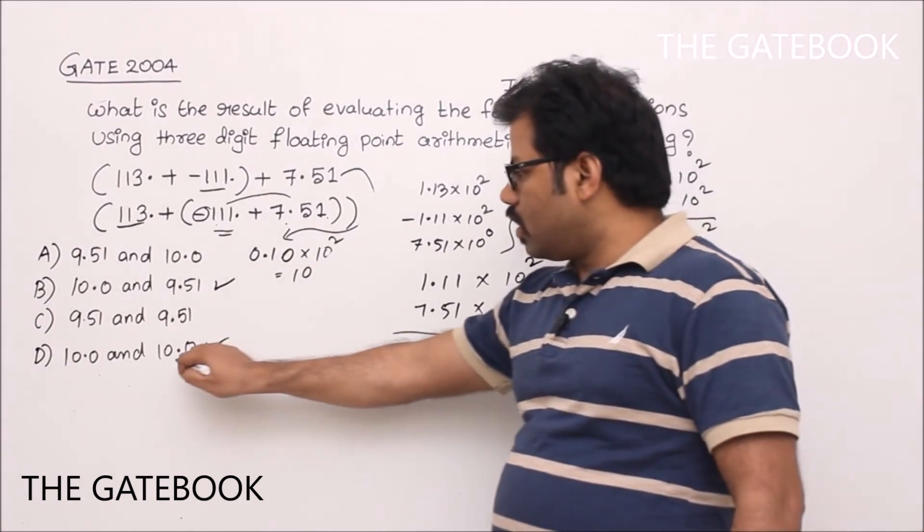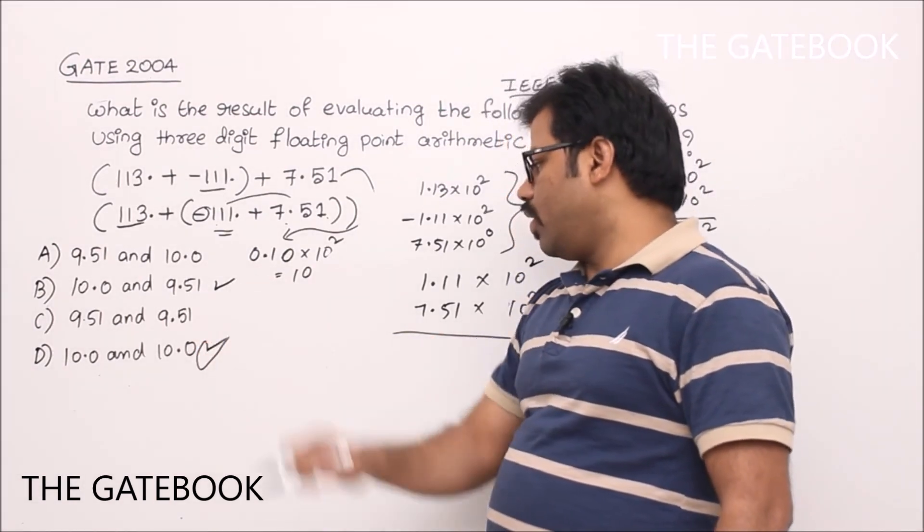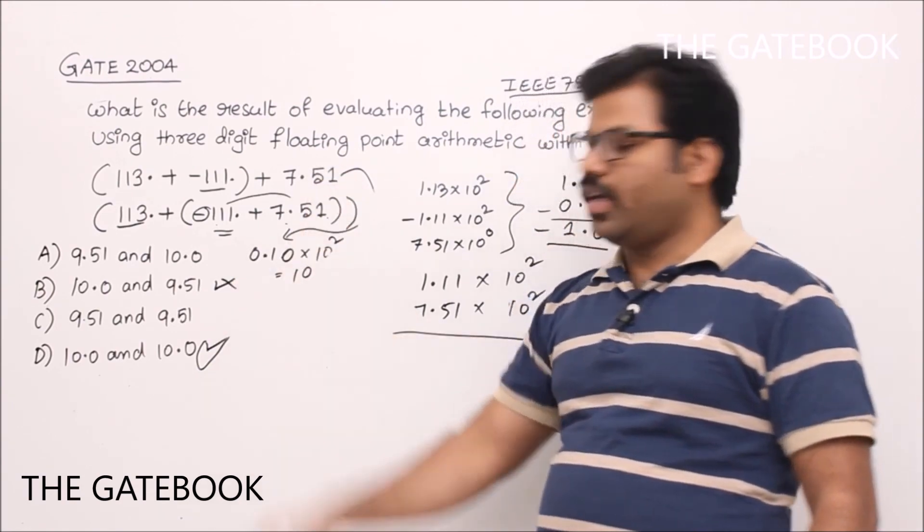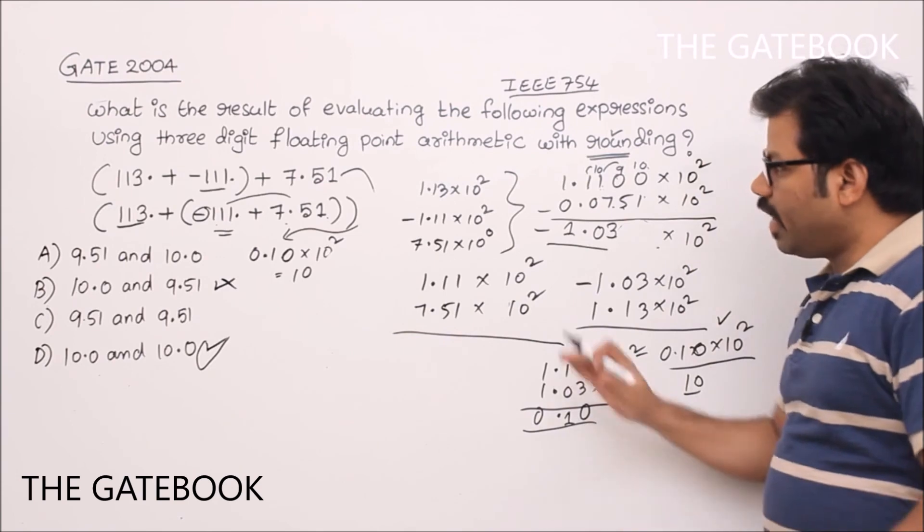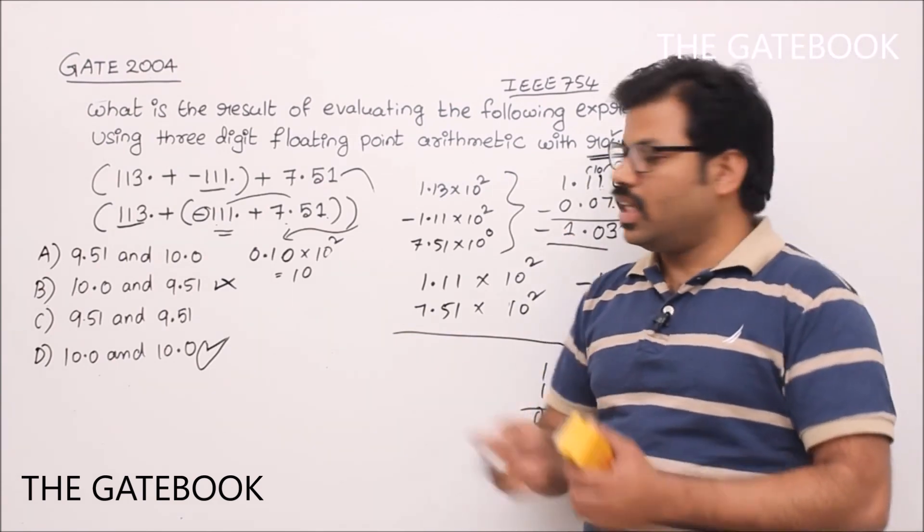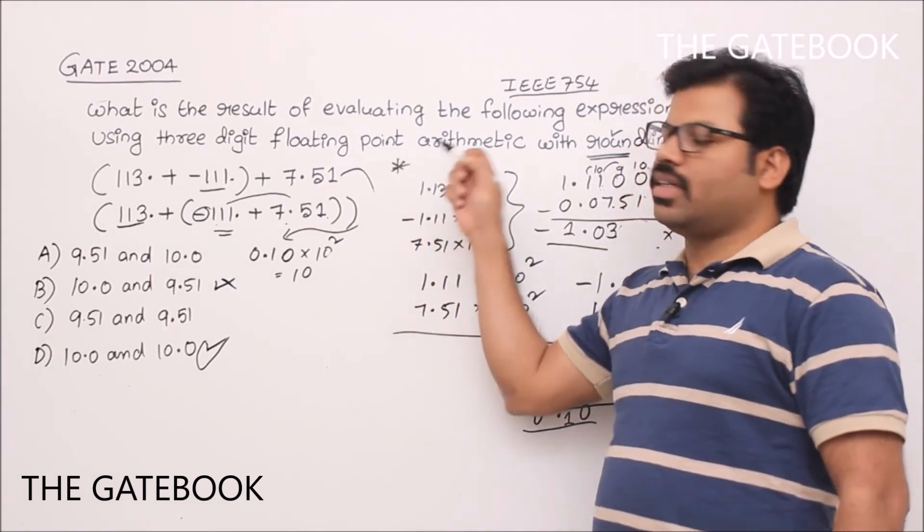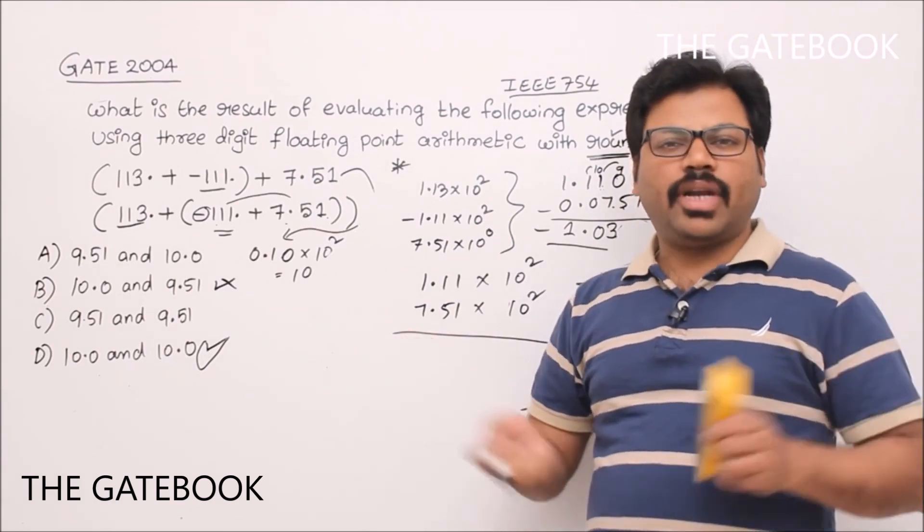So answer is 10.0 and 10.0. This is right. In that way, easily we can solve this problem. So blindly follow the rules. Here you should know how rounding takes place. That's it. If you understand that, it is pretty clear.